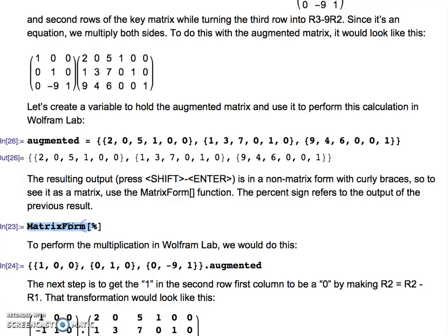If you want to actually see each step as a matrix, you can turn that into matrix form. So matrix form—notice it begins with a capital M, that means it's a function. In the Wolfram language, commands that are available to you always begin with a capital letter. Matrix form, and then I have this percent sign—percent sign just means the last output. So I'm going to turn into matrix form the last output.